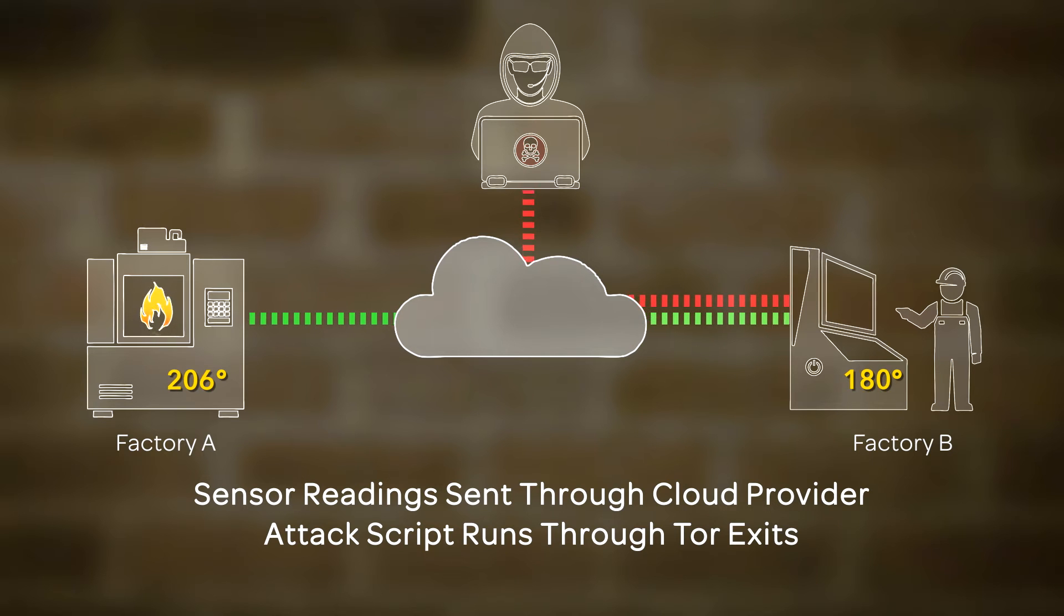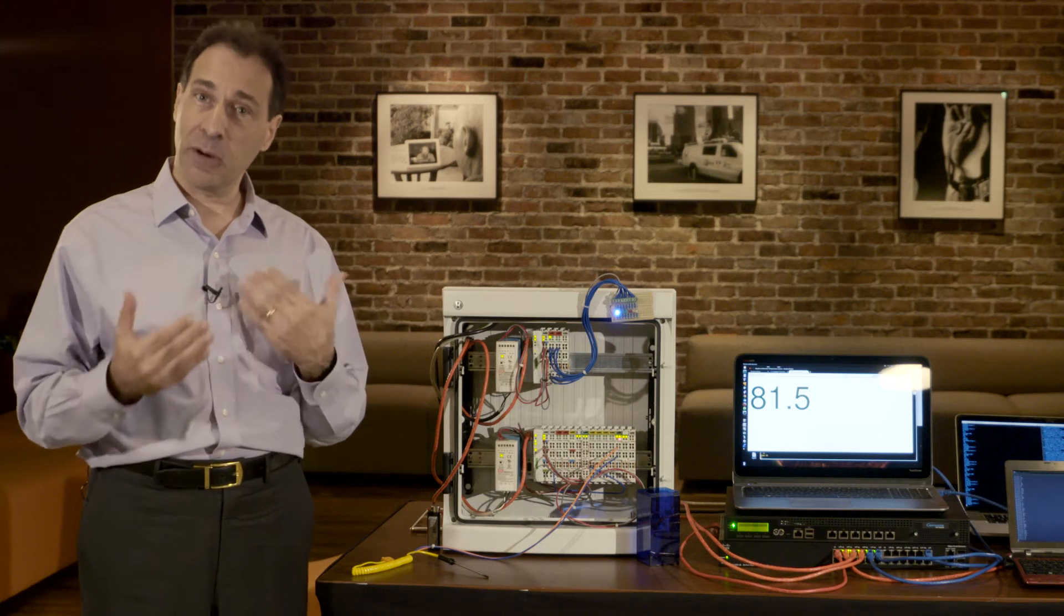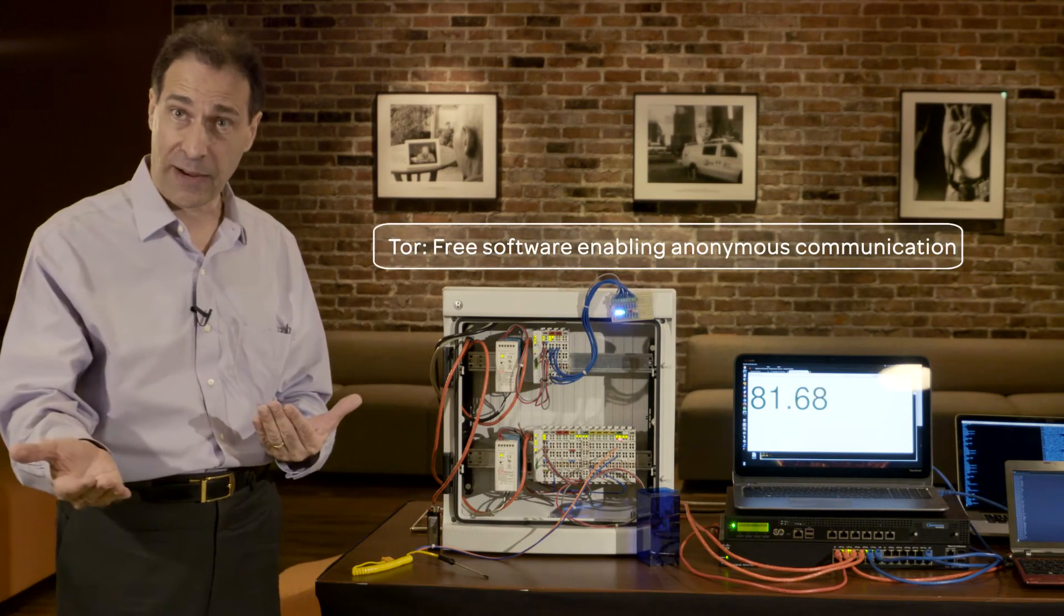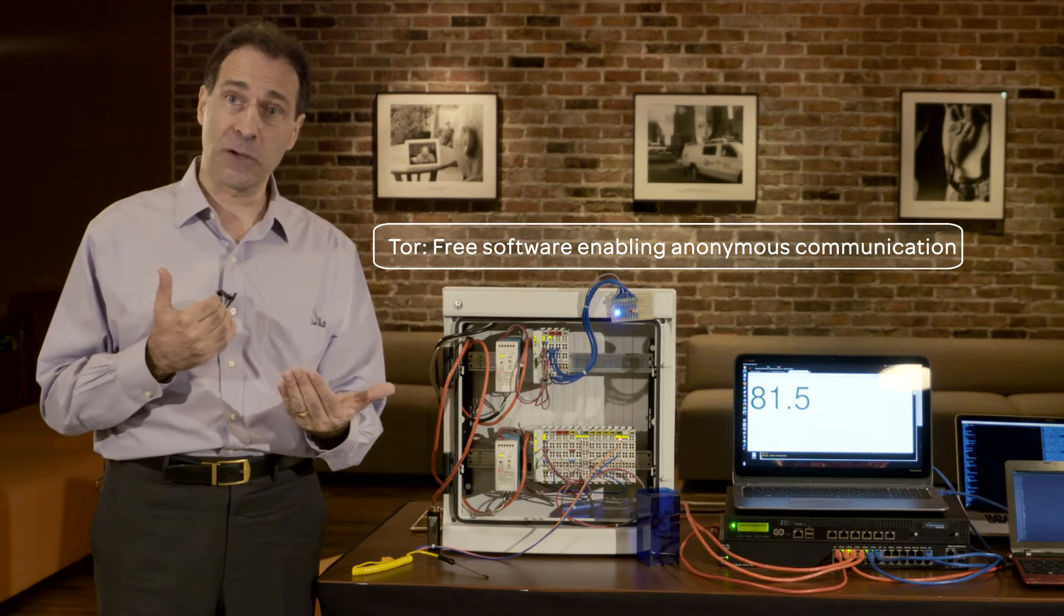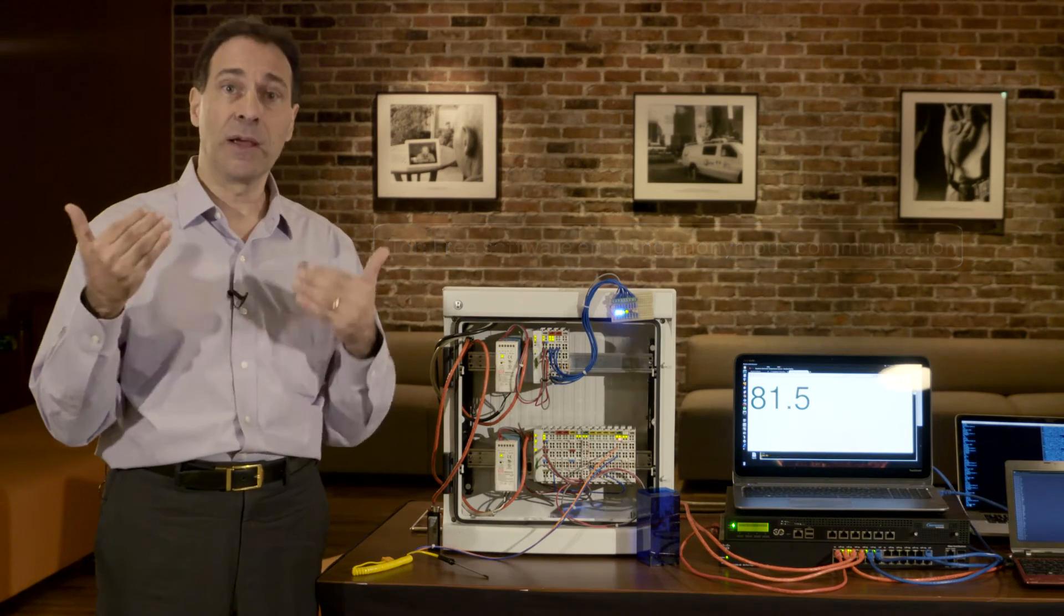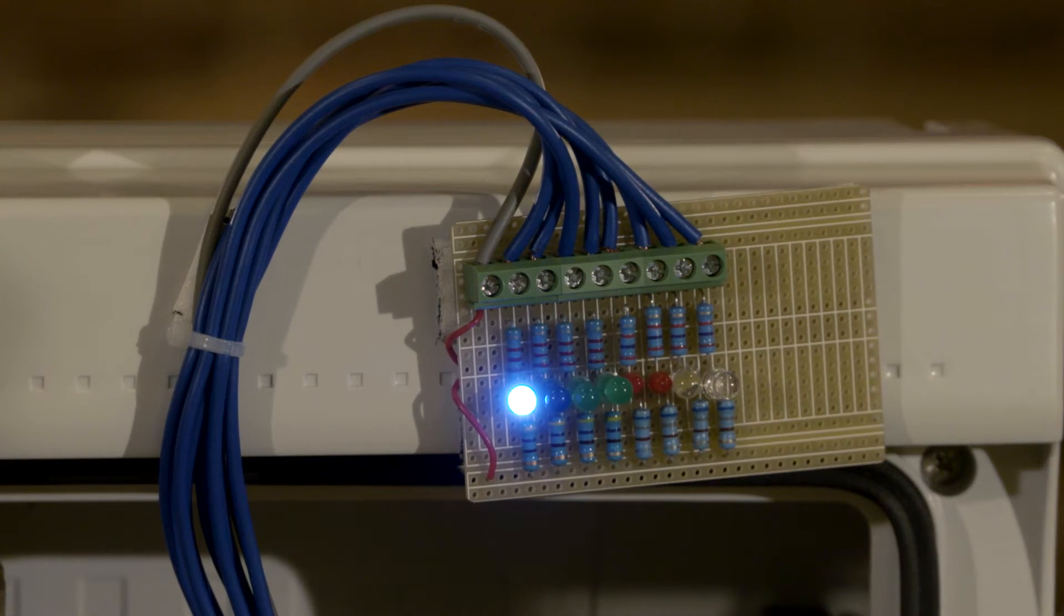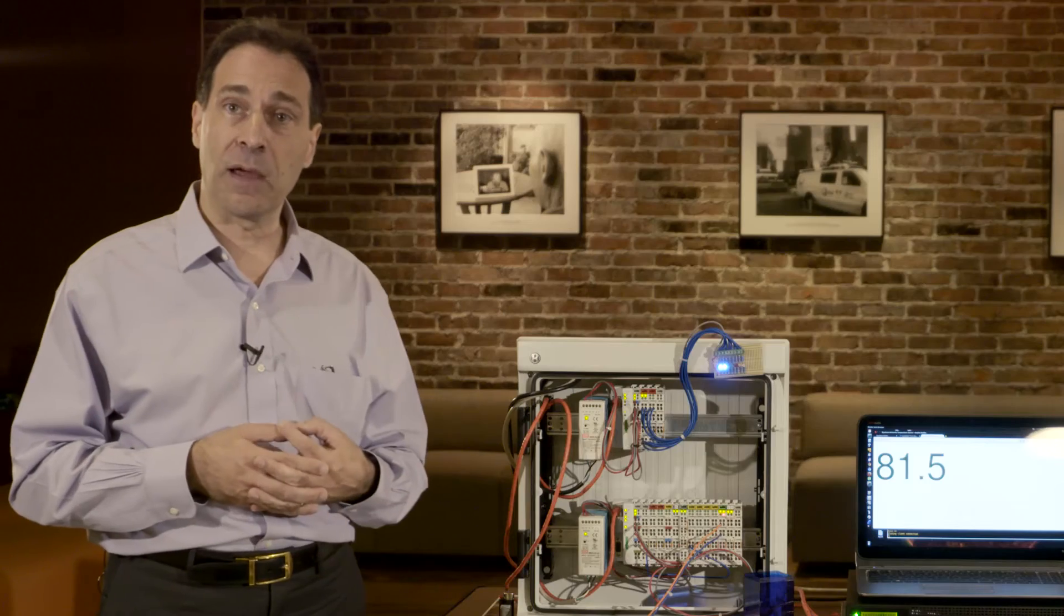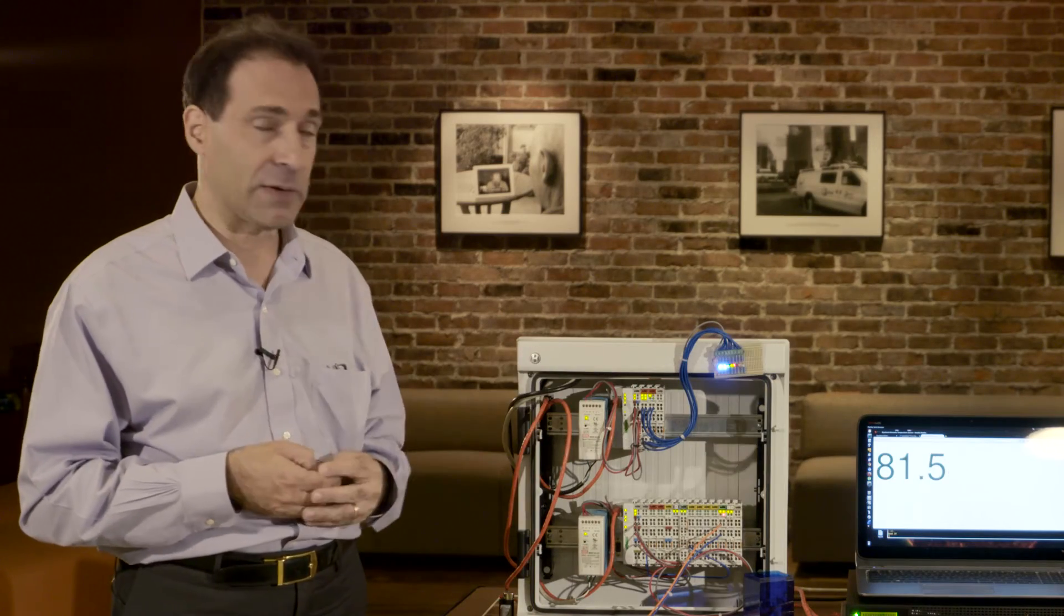With the attack script now, it's actually running through Tor exits. That's a pretty classic thing to do for hackers who want to hide their tracks, and so one of the things that the Bayshore policy engine in the cloud is capable of doing is recognizing when traffic is coming through a Tor exit, so that's another signifier that we're looking at bad traffic that should be blocked. So as you can see from our actuator light bar here, we're seeing attack behavior, and that's coming from the attack script.